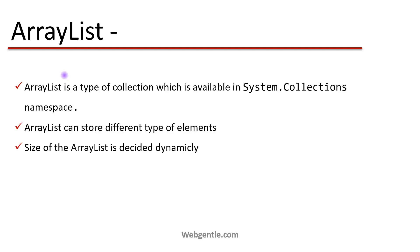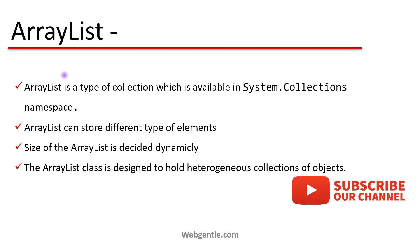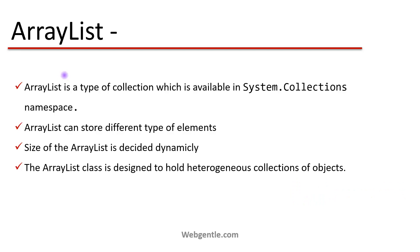The size of ArrayList is decided dynamically. When we were working with Array, we had to specify the size during initialization. In ArrayList, you don't have to specify the size — whenever you add new elements, the size is calculated dynamically and automatically. The ArrayList class is designed to hold heterogeneous collections of objects. We can store integer, string, or any type of element because the element type is object, and object is on top of everything in .NET.